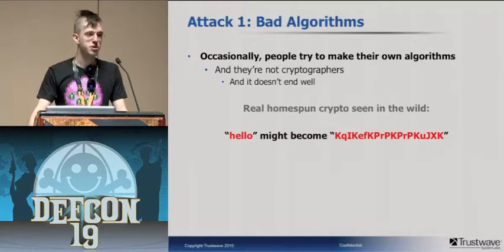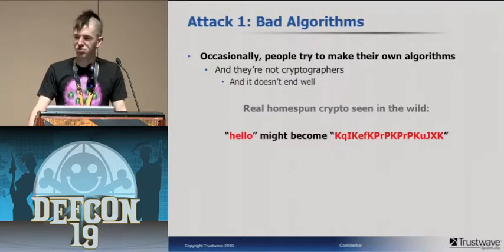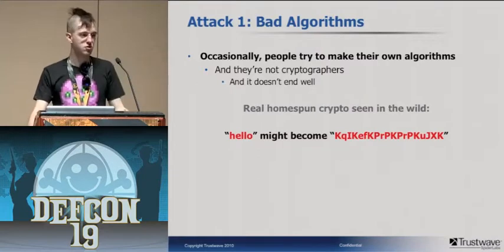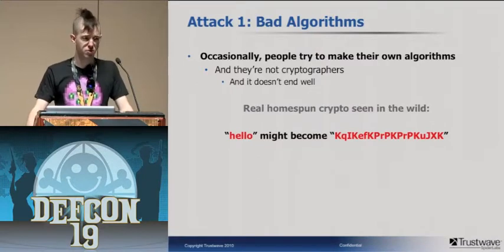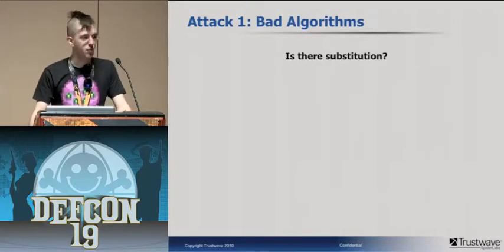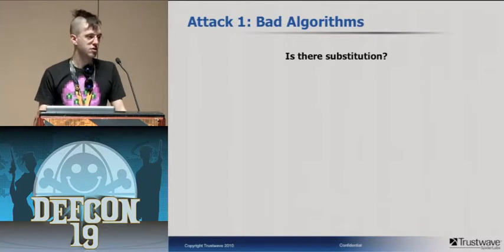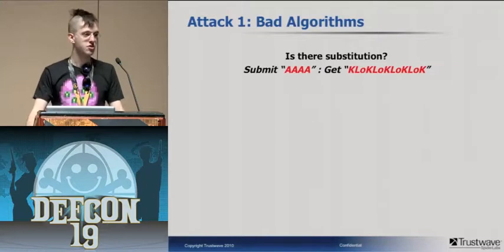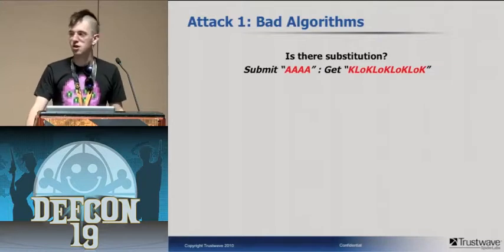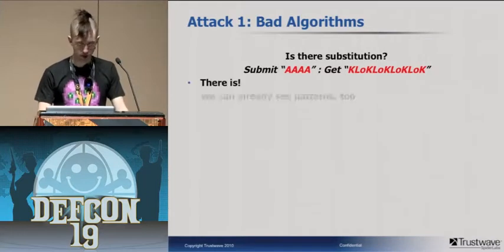I found an SQL injection flaw that only allowed me to read data from the database. I said I'd get all the credentials, but the passwords were all encrypted — bizarre-looking stuff that doesn't look like strong crypto. First thing I want to know: is there substitution? Are we switching characters for others? If we put in four uppercase A's, there are no uppercase A's in the ciphertext — there is definitely substitution here.